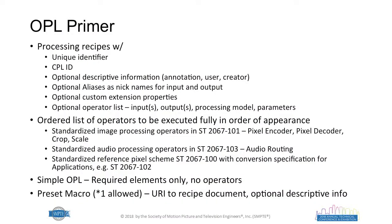Jumping into OPL: there are required components. Everything in an IMF package or system has to be uniquely identified — therefore there's a unique identifier. It's also crucial to have a composition to go with the operations, so there's a CPL ID reference as well. Optionally, there are many descriptive fields to help human understanding of what the instructions are. There are also aliases — nicknames for specified input-output — to help put together processing pipelines. Interestingly, the operator list is optional at this point; however, if one wants to do processing, it is required to have that piece in the package.